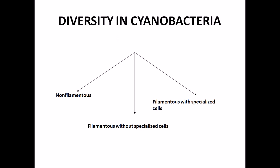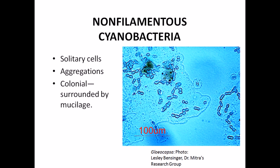Looking at cyanobacterial diversity, there are different types of species. Some cyanobacteria are non-filamentous. Another kind is filamentous but without any specialized cells. Specialized cells serve special purposes — for example, some are destined to fix nitrogen, and others act as spores to help the bacteria survive for a long time in the environment.